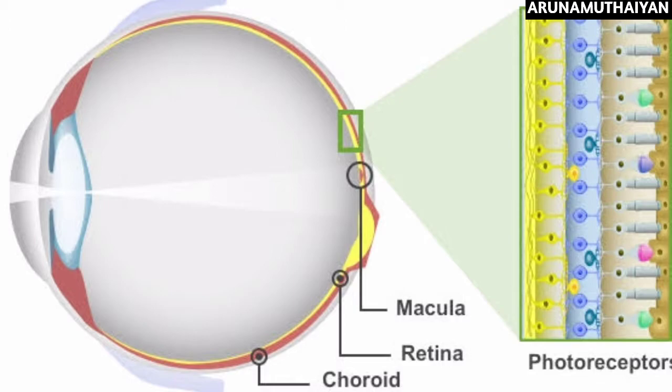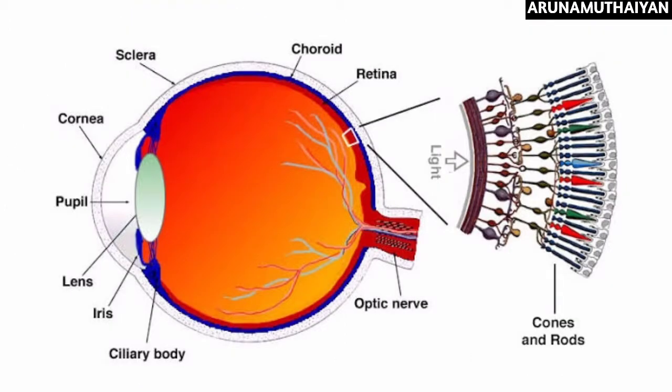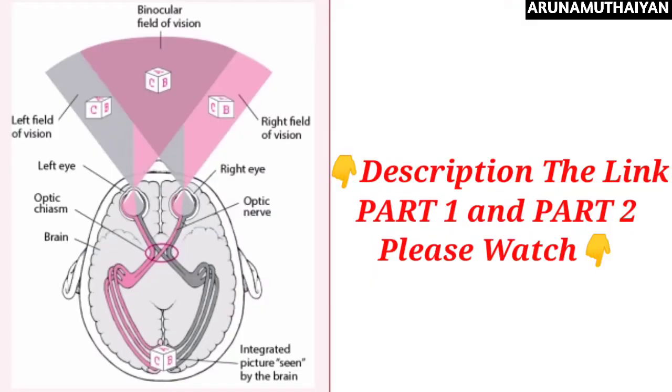First, we will discuss what the rod is. Rods help in seeing gray shades. In our eyes, we have gray shades and dim light perception. Rods absorb shape and movements, and are responsible for vision in dim light.